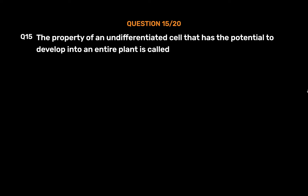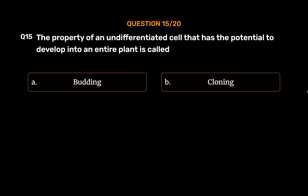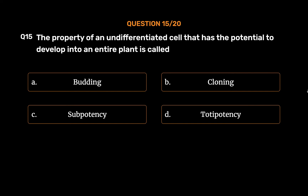Question No. 15: The property of an undifferentiated cell that has the potential to develop into an entire plant is called. Option A: Budding. Option B: Cloning. Option C: Totipotency. Option D: Totipotency. The correct answer is Option D: Totipotency.